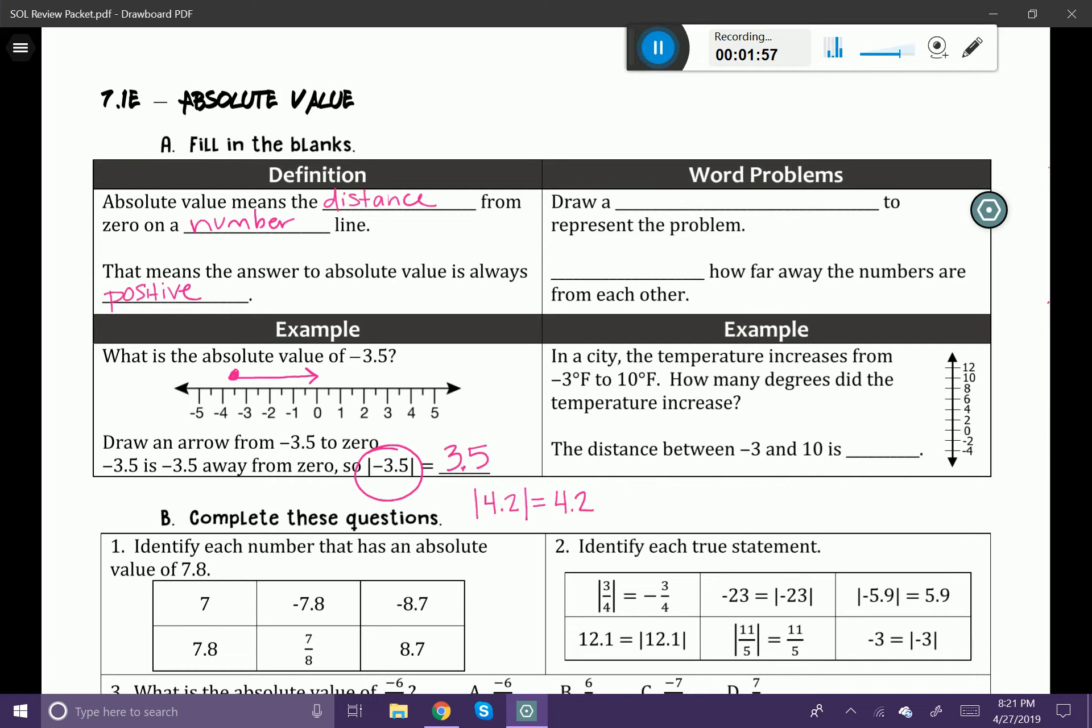Now what if I were to say negative 8? The absolute value of negative 8, well negative 8 stands 8 spaces away from zero. Therefore, our absolute value is going to be 8.